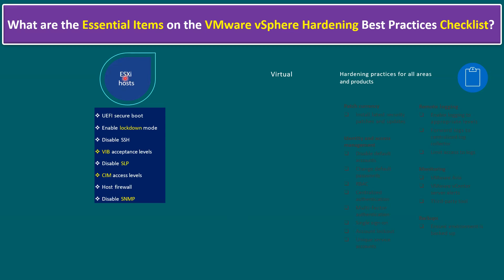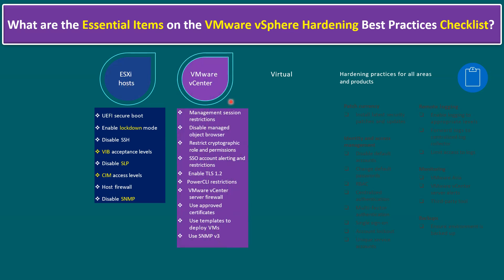To manage multiple ESXi hosts, we need a vCenter server. Within a vCenter server, there are also some hardening checklist items. One of the key items is management session restrictions. Management session means the VCAMI page — VMware vCenter Appliance Management Interface — which runs on port number 5480.